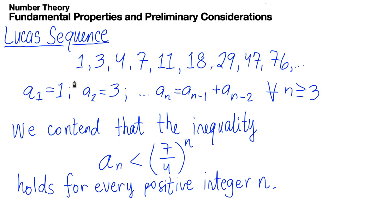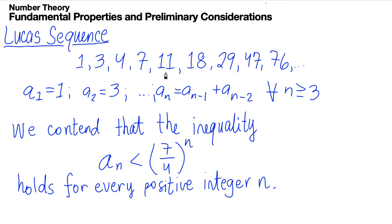This Lucas sequence is composed of the integers 1, 3, 4, 7, 11, 18, 29, 47, 76, where the first term is 1, the second term is 3, and the next consecutive terms after that will be the sum of the two terms before it. For example, 1 plus 3 is 4, 3 plus 4 is 7, 4 plus 7 is 11, 7 plus 11 is 18, and so on.